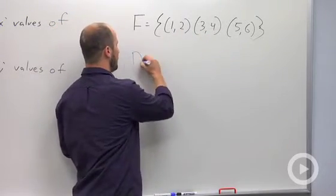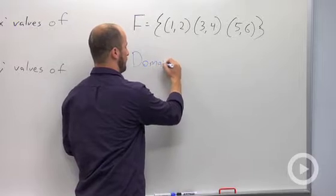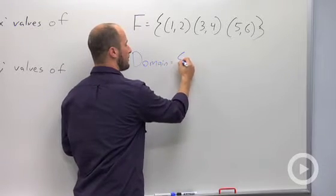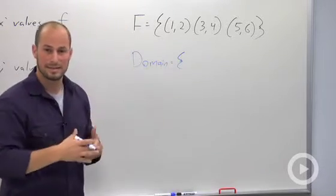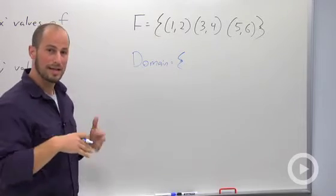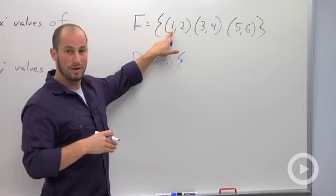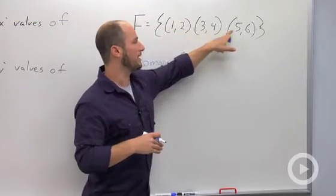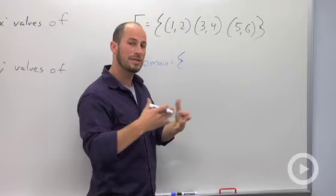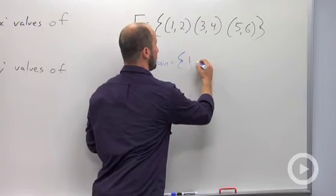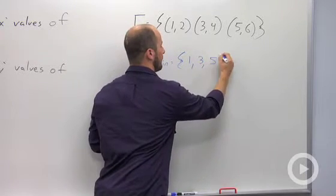We're asked to find the domain. Domain is a set of numbers, and the domain corresponds to the x values. Here we have the x value one from this point, three from this point, and five from this point. Put those together and that makes our domain: one, three, and five.